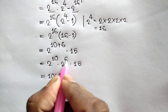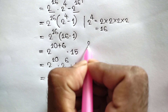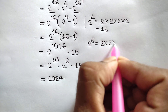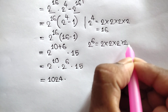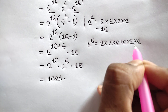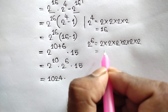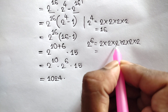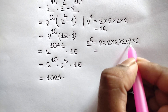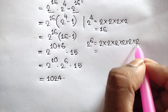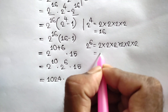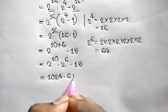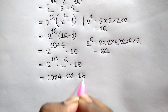And 2 to the power 6 means 6 times multiplying 2: 2, 4, 8, 16, 32, 64. So 2 to the power 6 equals 64. So here we get 1024 times 64 times 15.